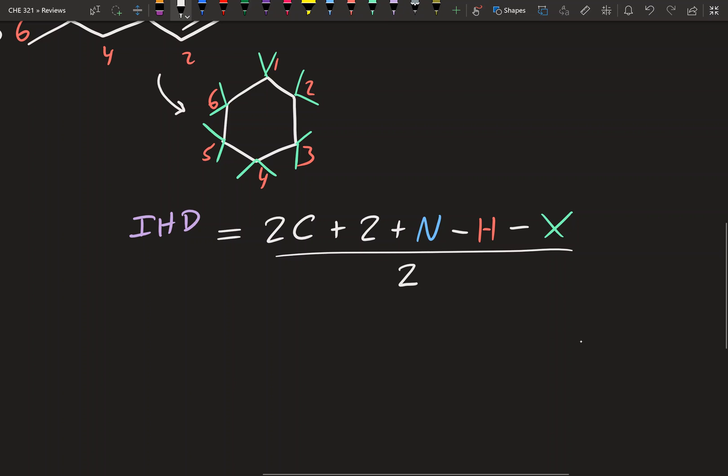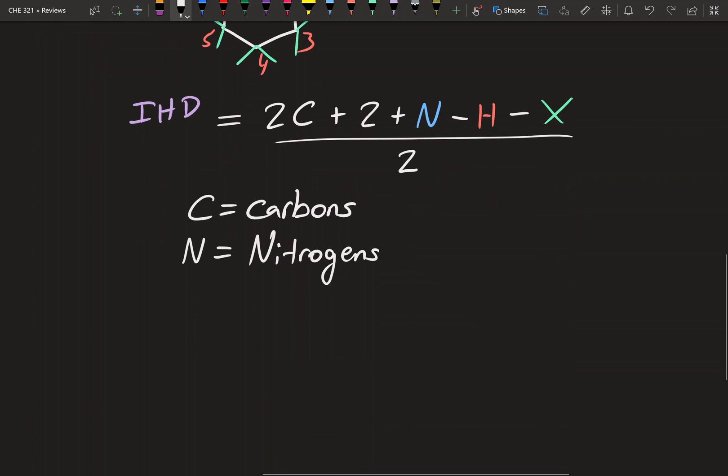So the C represents carbons. N equals nitrogens. H equals hydrogen. And X equals the halogens, so like chlorine, bromine.